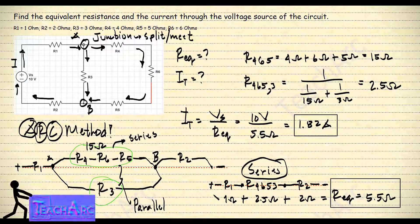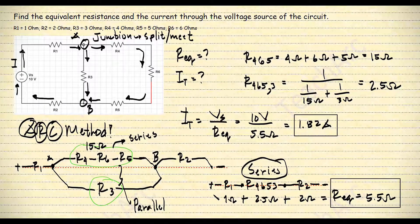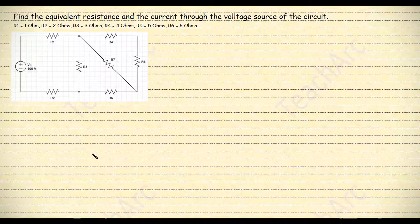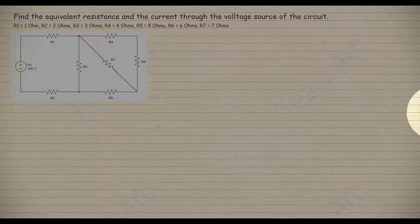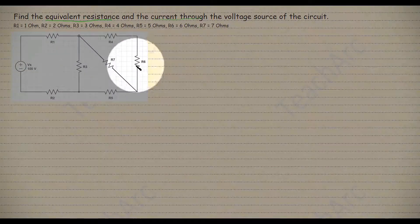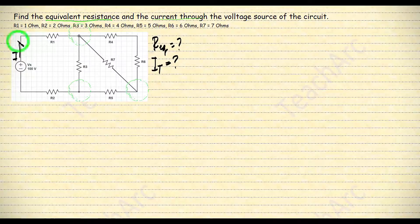The first method will solve many series-parallel circuit problems, while the ARC method is very effective with more complex circuits. Let's try another example. This time I will be using only the ARC method for practice. We are again asked to solve for the equivalent resistance and the total current. The resistors are given below. Analyzing this circuit tells us that there are three junctions with several splits.